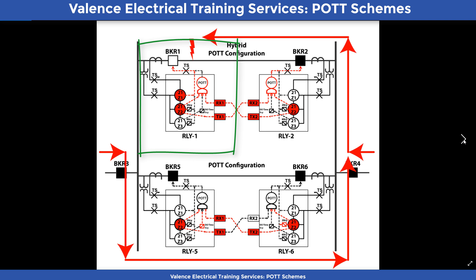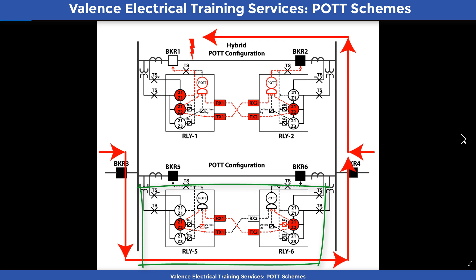Breaker 1 operates with no intentional time delay, which causes a sudden current reversal through Relays 5 and 6. Relay 5 now detects a Zone 2 fault, and it could detect a POT permissive because Relay 6 may not have had time to release its previous permissive signal yet. But Relay 5 detected a Zone 3 reverse fault a moment before, so the dropout timer will hold the Zone 3 input to the POT scheme on. The NOT logic gate reverses the input, and the POT scheme cannot operate for five cycles, giving Relay 6 plenty of time to release its POT permissive signal. We have now guaranteed that Relay 2 will always win the race, because Relay 2 will operate after a short time delay, and the fault will be isolated from the system without affecting the non-faulted line. This scheme's weakness has been beaten into submission with logic.